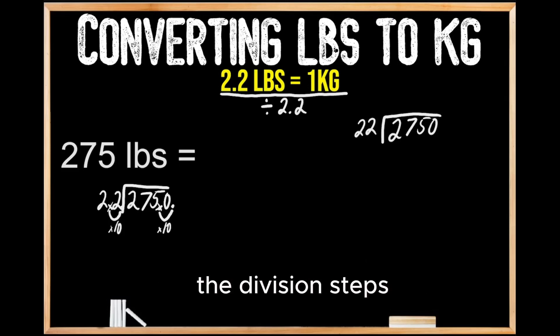So now working through the division steps from left to right, we can't make a group of 22 out of 2, so moving from left to right, we can make a group of 22 out of 27. We're going to write a 1 up top, and then we're going to multiply.